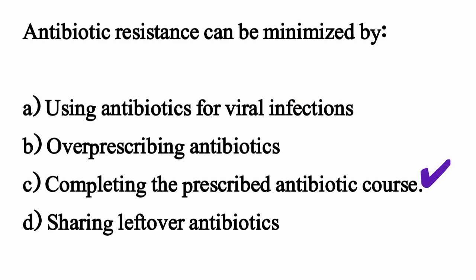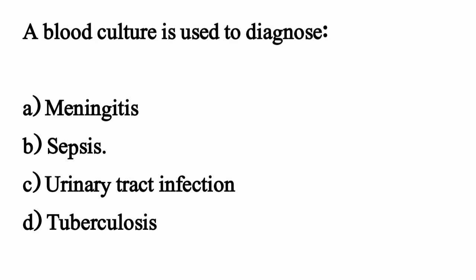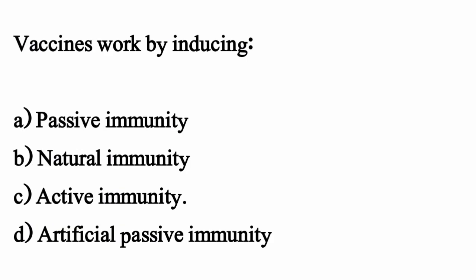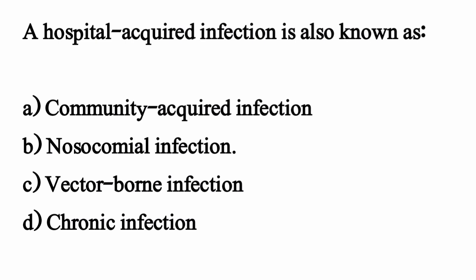A blood culture is used to diagnose — the correct option is option B. Vaccines work by inducing — the correct option is option C: active immunity. A hospital-acquired infection is also known as — the correct option is option B: nosocomial infection.